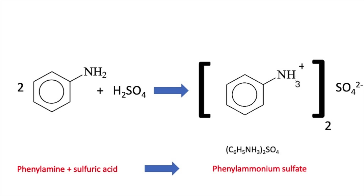Now let's look at an example with sulfuric acid. Here I've added sulfuric acid to phenylamine and formed the salt phenylammonium sulfate. Phenylamine is C6H5-NH2. Reacting this with H2SO4, we form the phenylammonium ion — a benzene ring with an NH3+ — and the sulfate ion SO4 2-. Because sulfuric acid has two H+, we need two phenylamine molecules, each accepting one H+. Therefore the salt phenylammonium sulfate is made up of two phenylammonium ions and one sulfate ion SO4 2-, which can be written as (C6H5-NH3)2SO4.